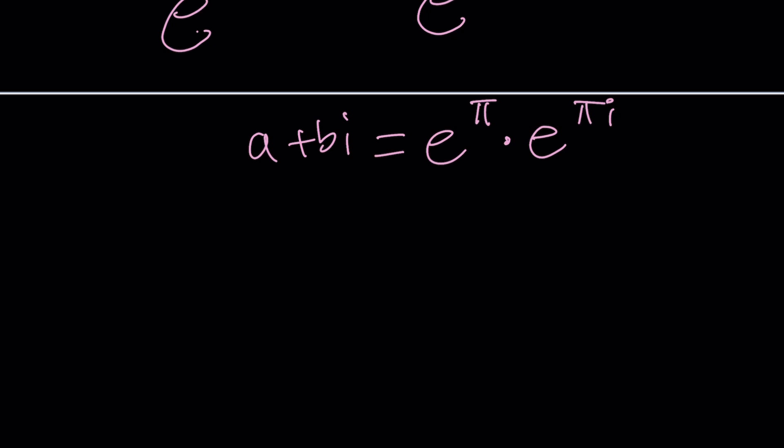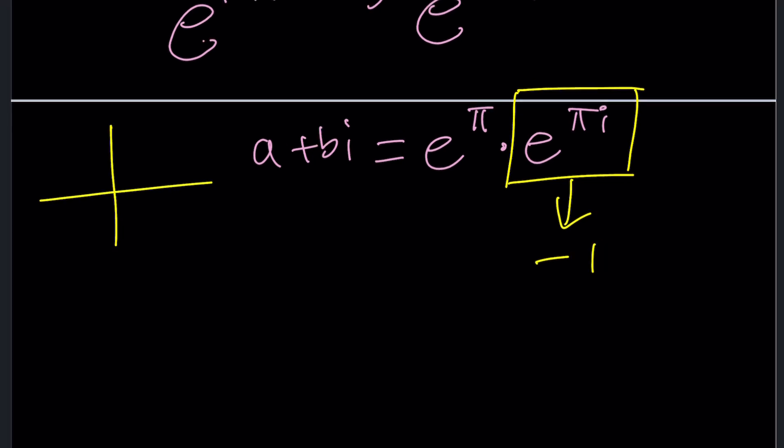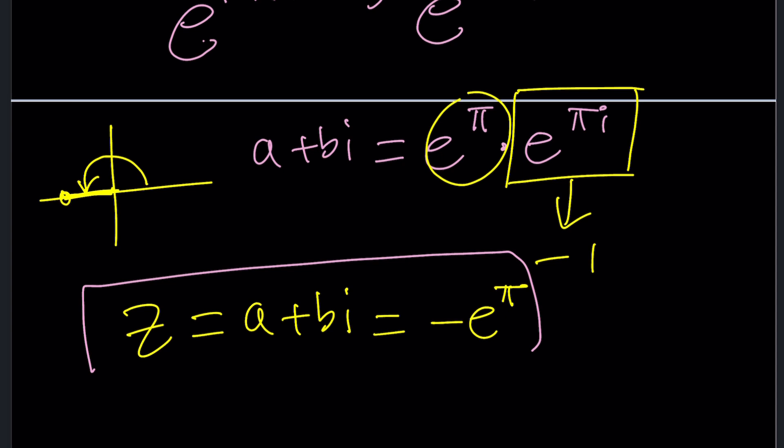How do I know that? Because this is a complex number in polar form. And as you know, π is the argument for -1. So then this becomes -1 times e^π. So a + bi, which is our z, becomes -e^π. But we did find positive e^π because we made an assumption. So are we able to go back and fix it? Please let us know.